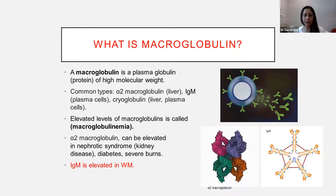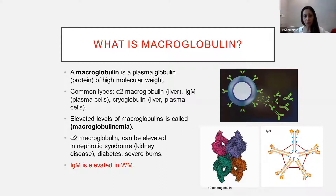Waldenström postulated that this component, the 19S, was a preformed giant molecule rather than an aggregate of small subunits, and he called this 19S molecule macroglobulin. A macroglobulin is a very big protein — a globulin with a very high molecular weight. The three most prevalent types are alpha-2 macroglobulin secreted from the liver, IgM or immunoglobulin M, which contributes to Waldenström's macroglobulinemia, and cryoglobulin created from the liver or the plasma cells. Elevated levels of macroglobulin is called macroglobulinemia, and that is the name of this subtype of lymphoma.